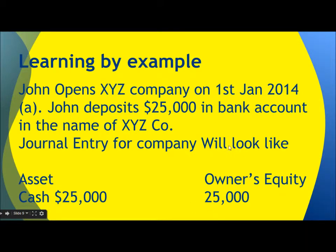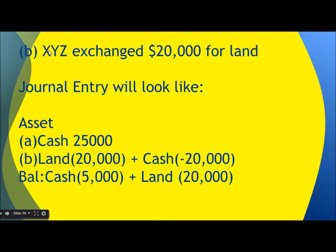Next example: XYZ exchanges $20,000 for land. Out of the $25,000, the company uses $20,000 of cash to buy land. Land is an asset worth $20,000. We deduct $20,000 from cash, leaving $5,000 cash plus land worth $20,000 — totaling $25,000 in assets, which equals $25,000 in owner's equity. In this transaction, only the composition of assets changed.